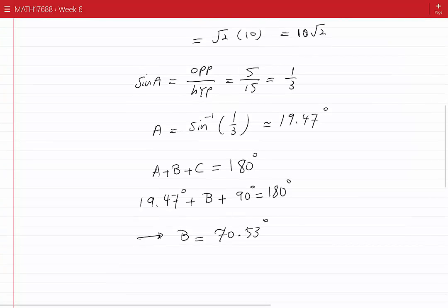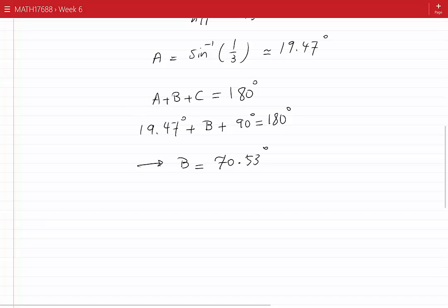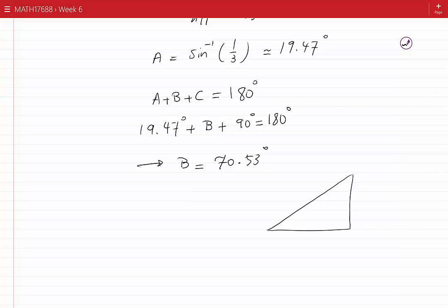Once again, I've kept 4 significant digits. Therefore, we've been able to find all of the angles and all of the sides of the triangle. The hypotenuse is 15 and one of the sides is 5 centimeters. The other side is 10 root 2 centimeters. The angle facing the hypotenuse is 90 degrees. The angle facing the side which is 10 root 2 centimeters is 70.53 degrees, and the angle facing the side which is 5 centimeters is 19.47 degrees.